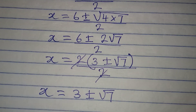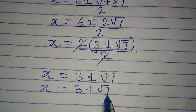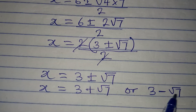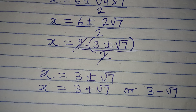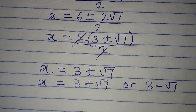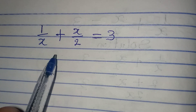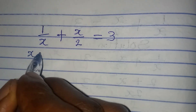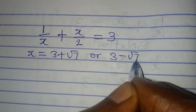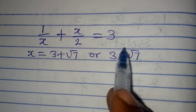This means x equals 3 plus root 7, or x equals 3 minus root 7. These are the values of x that satisfy the equation. Let us check to know if we are correct. This is the original equation given to us, and we got x equal to 3 plus root 7 or 3 minus root 7. Let's check for the positive value, 3 plus root 7.